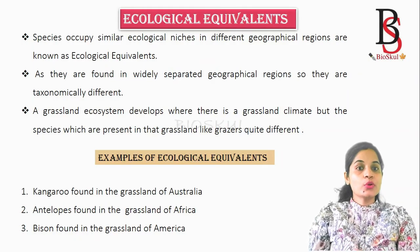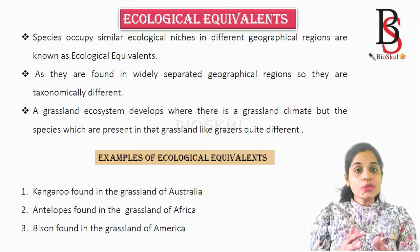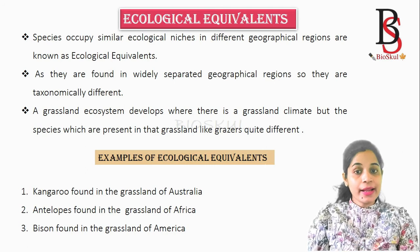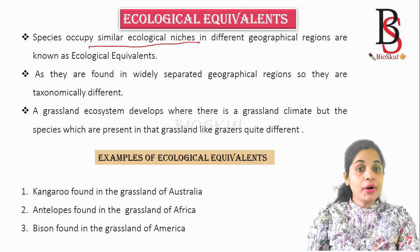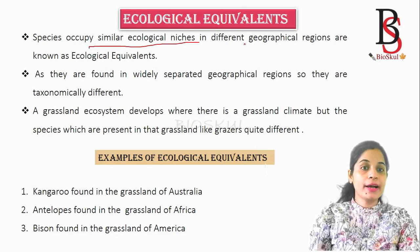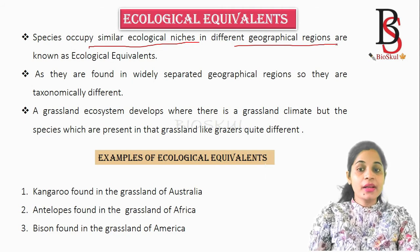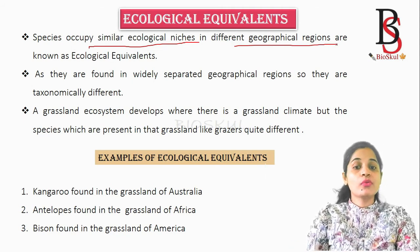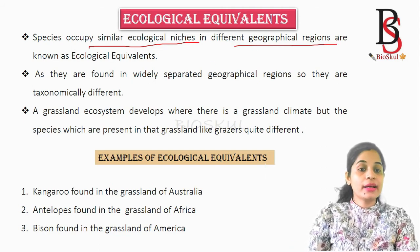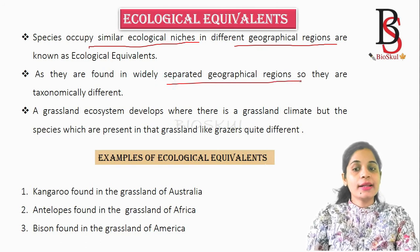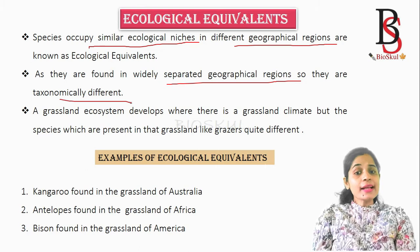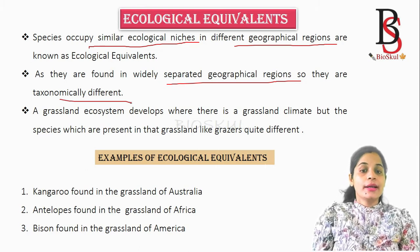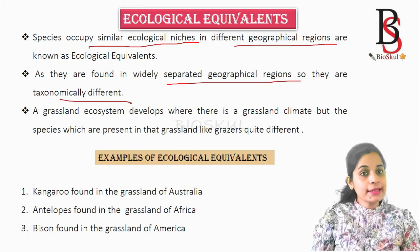What is ecological equivalence? Ecological equivalence is defined as the species that occupy similar ecological needs but in different geographical regions. As they are found in widely separated geographical regions, they are taxonomically different from each other.